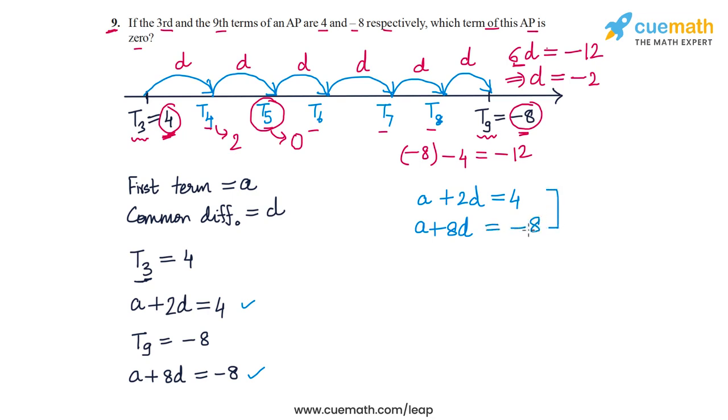A plus 2D equals 4, and A plus 8D equals minus 8. To solve this pair, we can subtract the two equations. Let's call this equation 1 and this equation 2.